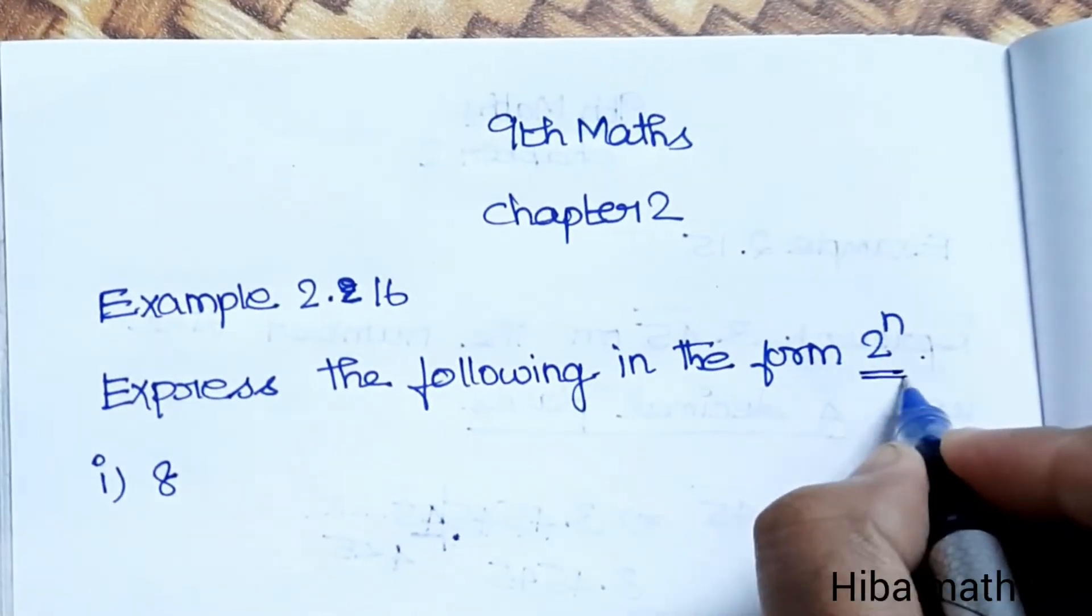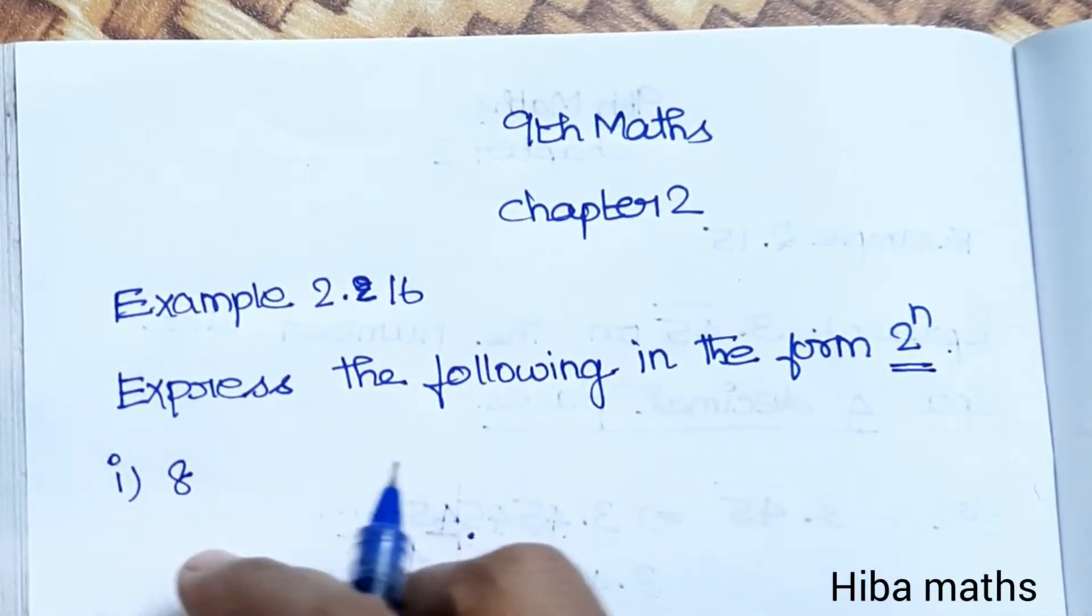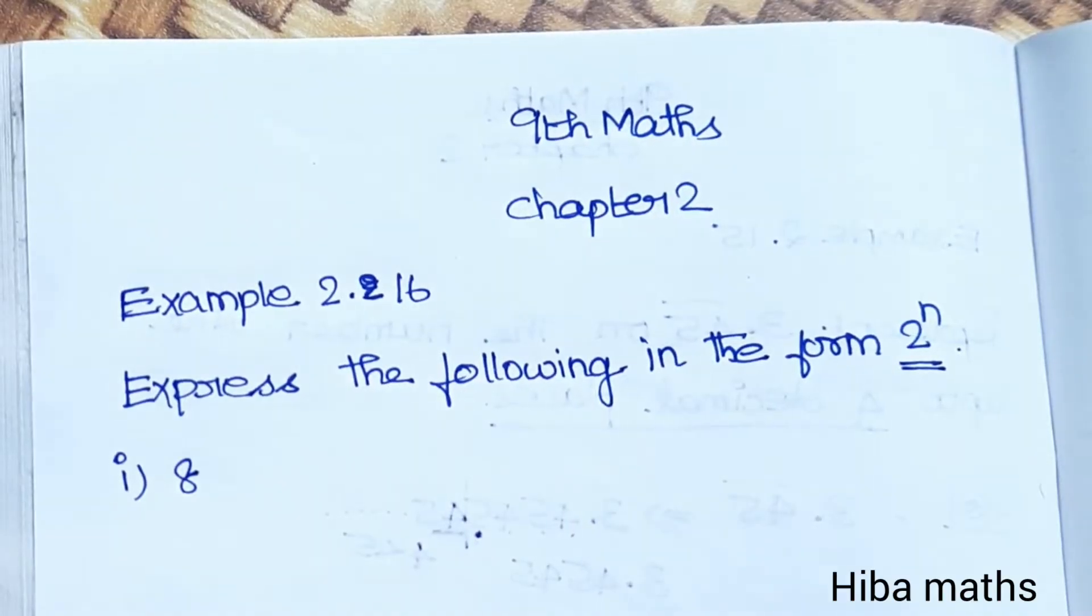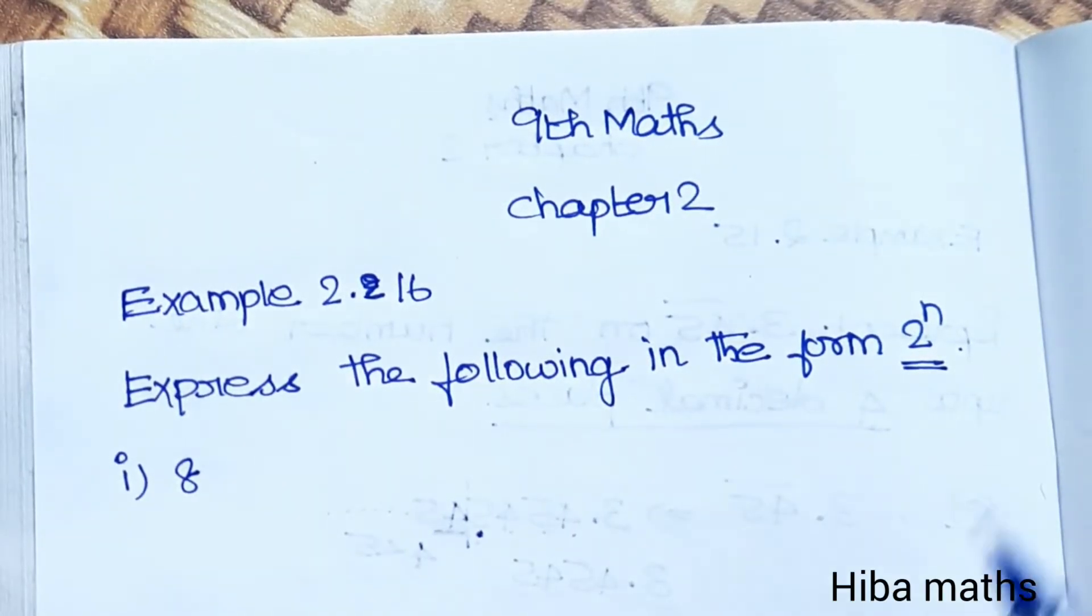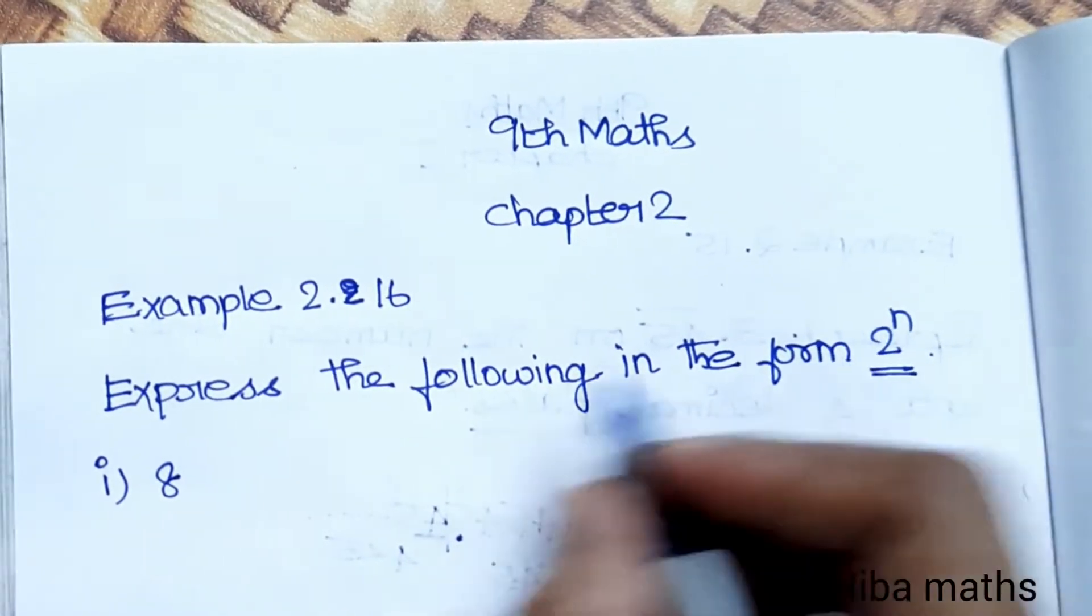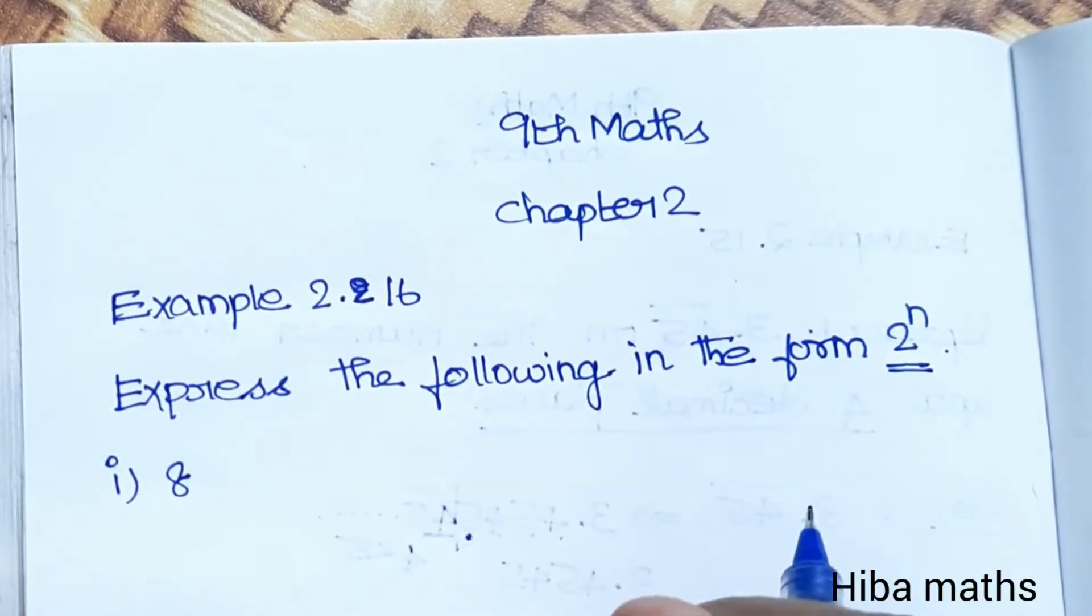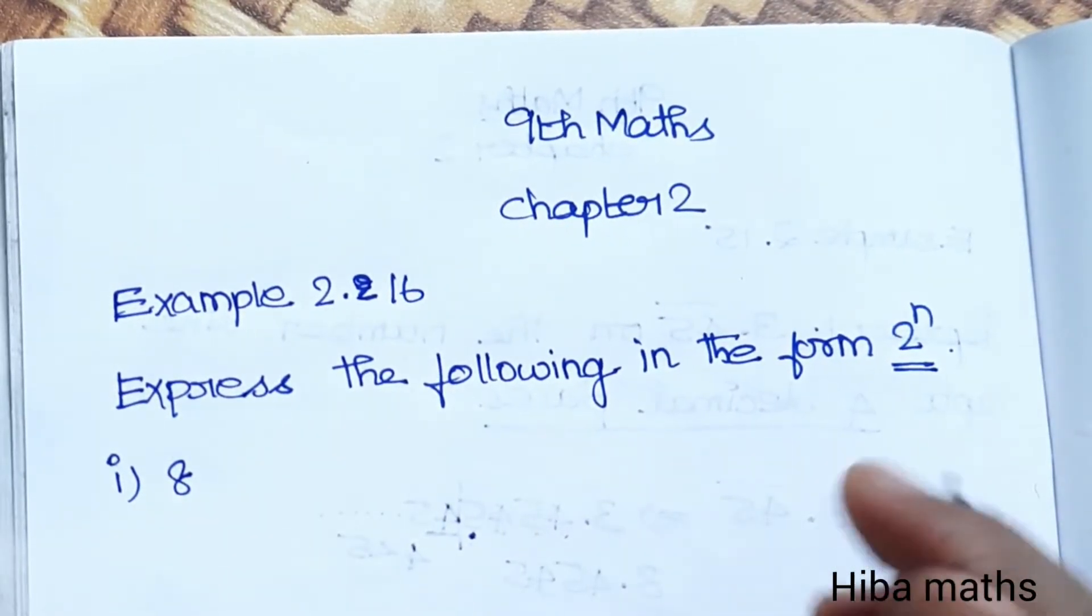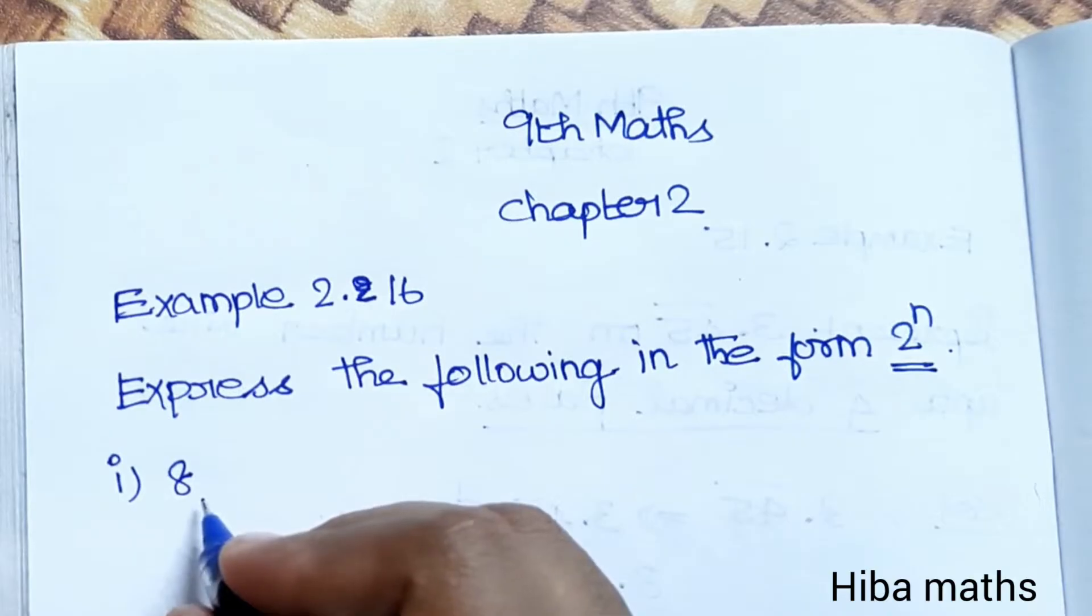We have questions to express in 2^n format. We can use the prime factorization method, dividing by 2. First question: 8.